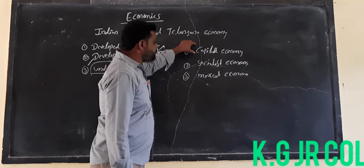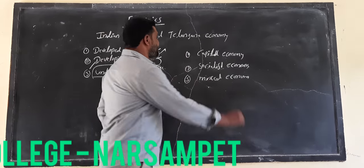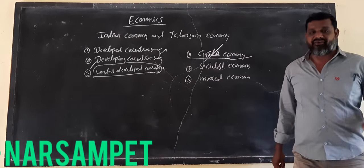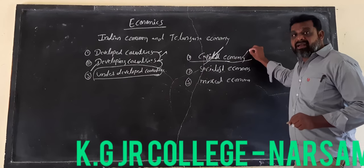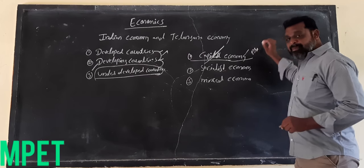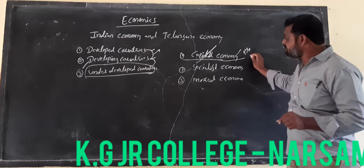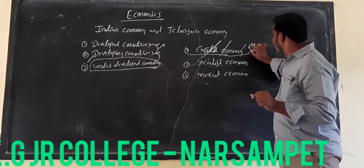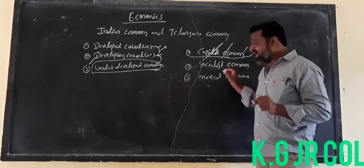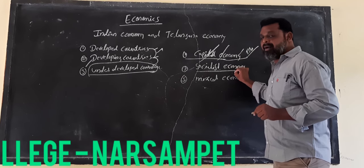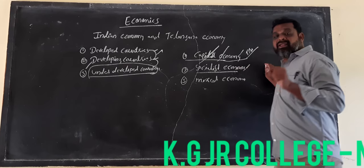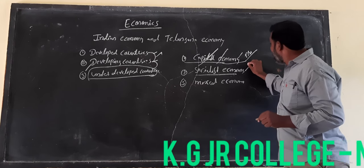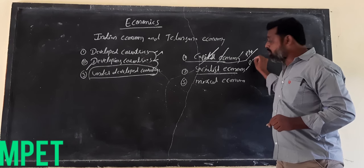What is the meaning of Capitalist Economy? The Capitalist Economy means all types of sectors and markets are under private persons and private sectors. This is called the Capitalist Economy. The Socialist Economy is vice versa — all types of markets and all types of sectors are under the public sector or government.